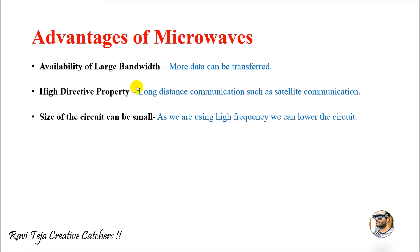The third advantage is that devices which use microwaves can be small. The circuit of microwave devices or the circuit which uses microwave frequencies can be very small. As microwave frequencies can travel through large distances, the antennas or circuitry manufactured to receive those microwave signals can be as small as possible. That's why all smartphones or electronic devices which communicate wirelessly nowadays are very small in size due to microwave frequencies.